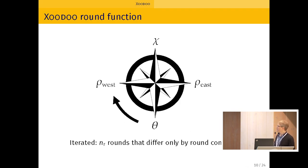So the round function consists of first theta, the linear mixing. Rho west, we will move the planes independently of each other. Then chi, the nonlinear S-box. And rho east, again, we will move the planes independently of each other. And of course, there are round constants.